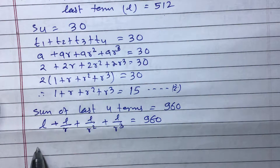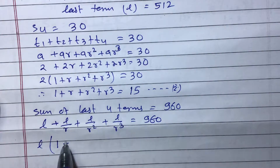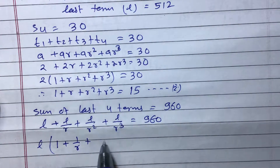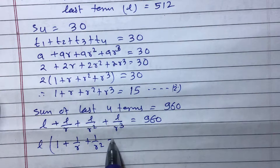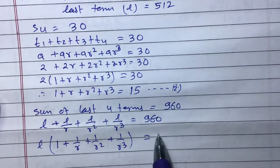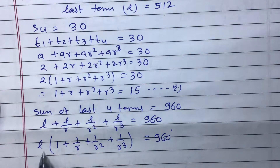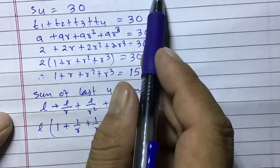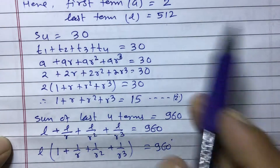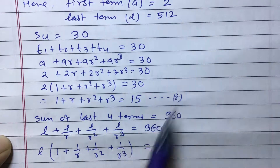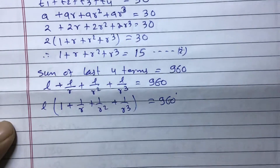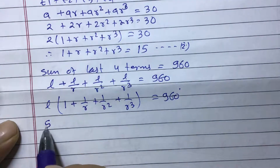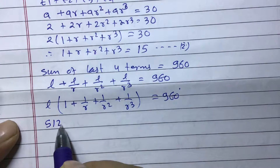Taking L as common, we get L times (1 + 1/r + 1/r² + 1/r³) equals 960. The value of L is 512, so we put 512 here: 512 times (1 + 1/r + 1/r² + 1/r³) equals 960.